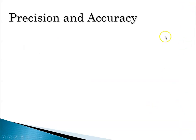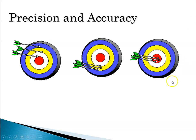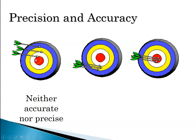Let's look at an example of precision and accuracy using three bullseyes. The goal is to shoot arrows and hit the red dot in the center. In the first case, the three arrows are not at the bullseye and not close together — they are neither accurate, since they're not near the target, nor precise, since they're not close together.